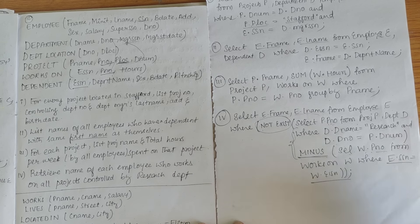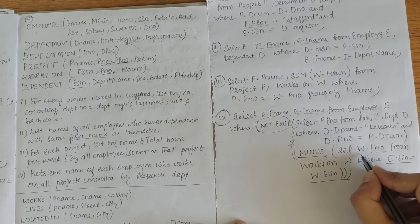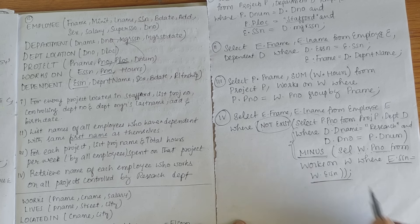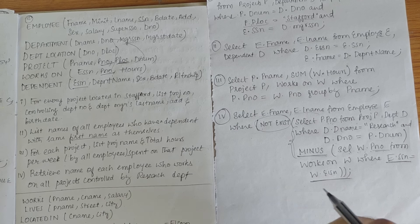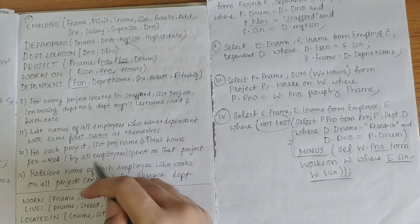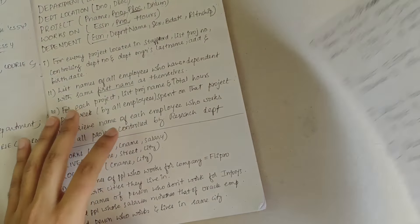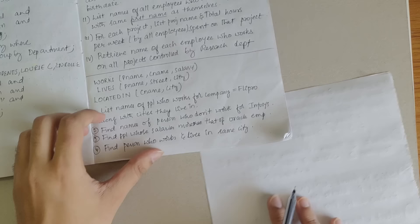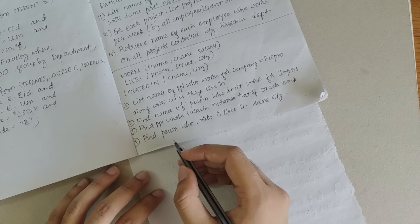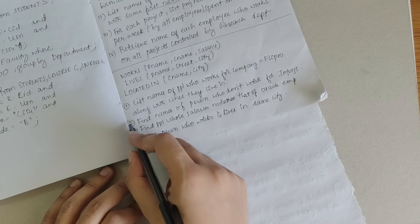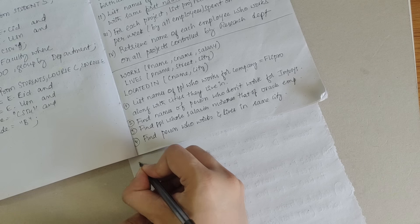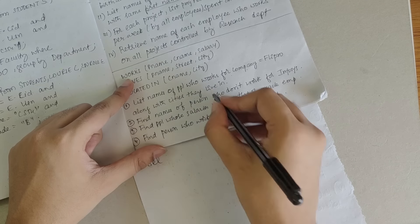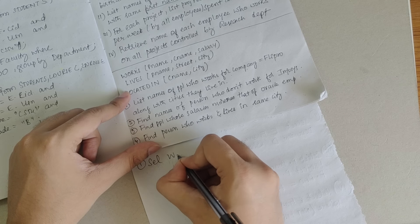The fourth query is to retrieve the name of each employee who works on all projects controlled by the research department: SELECT e.fname, e.lname FROM Employee e WHERE NOT EXISTS (SELECT p.pnumber FROM Project p, Department d WHERE d.dname = 'Research' MINUS SELECT w.pno FROM Works_On w WHERE e.ssn = w.essn). The NOT EXISTS condition means if the subquery returns false, the outer query returns true.